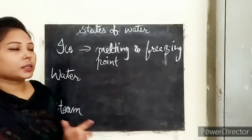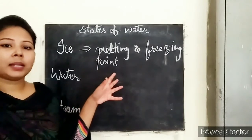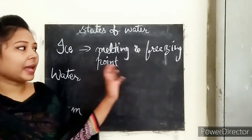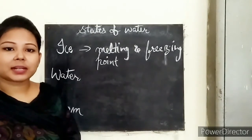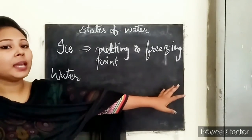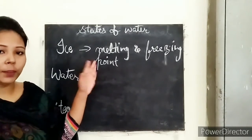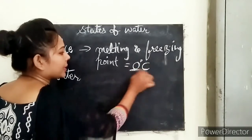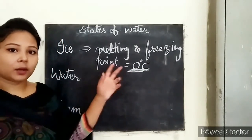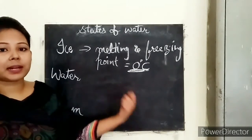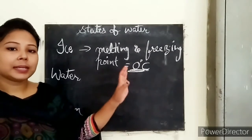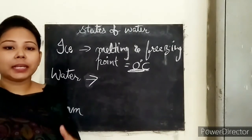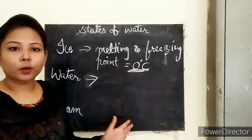Let's talk about ice first. How does water change into ice, and what temperature does it require? The melting point and freezing point of water are the same. Melting point is when a liquid starts to melt, and freezing point is when a substance starts to freeze. For water, both the melting and freezing point are zero degrees Celsius.